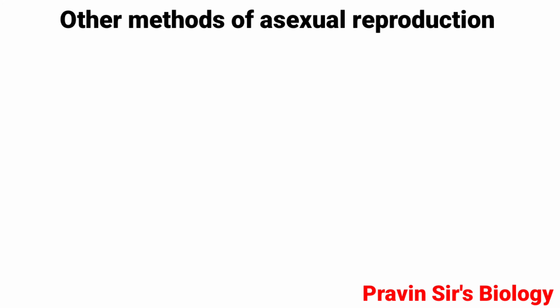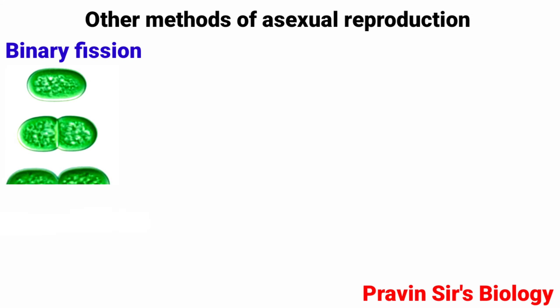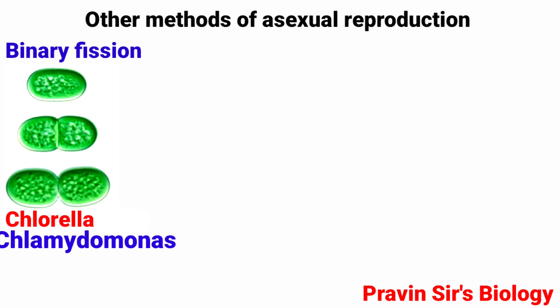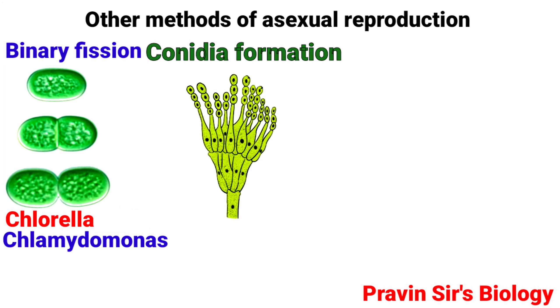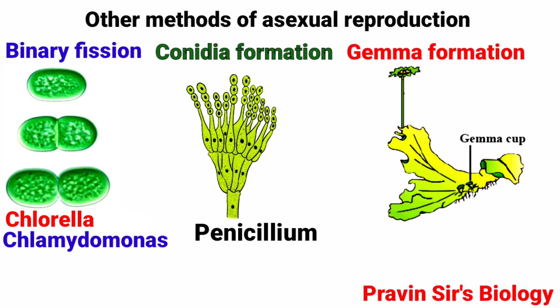Other methods of asexual reproduction include binary fission, which occurs in Chlorella, Chlamydomonas, and Cachnaeus; conidia formation in Penicillium; and gemma formation as in Marchantia.